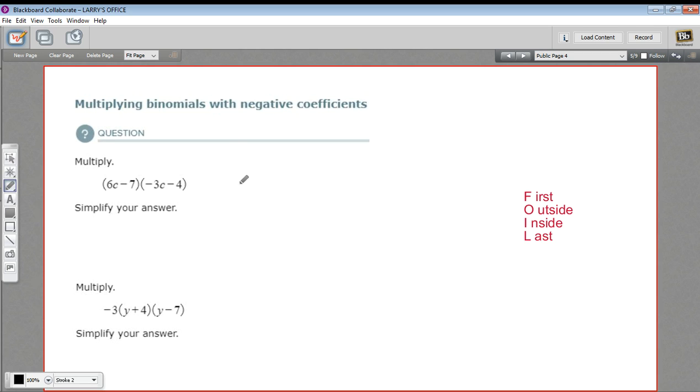In these problems, we are multiplying binomials, and we've got a lot of negative signs to worry about. So it's something we just need to keep track of as we go along. The basic process is the same as you've been using. We're going to foil these.